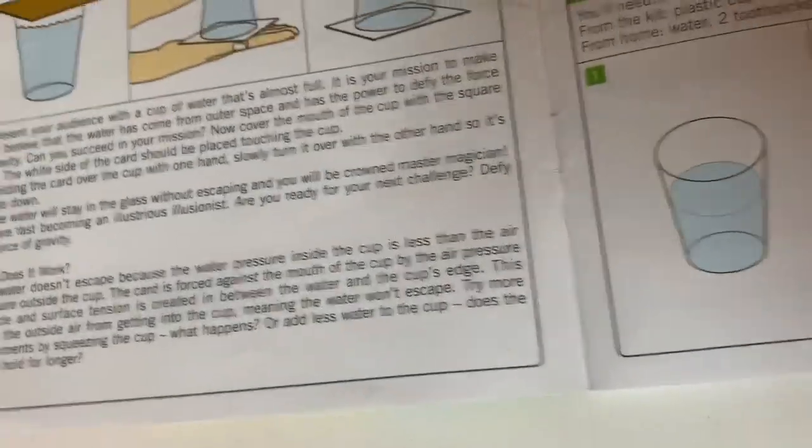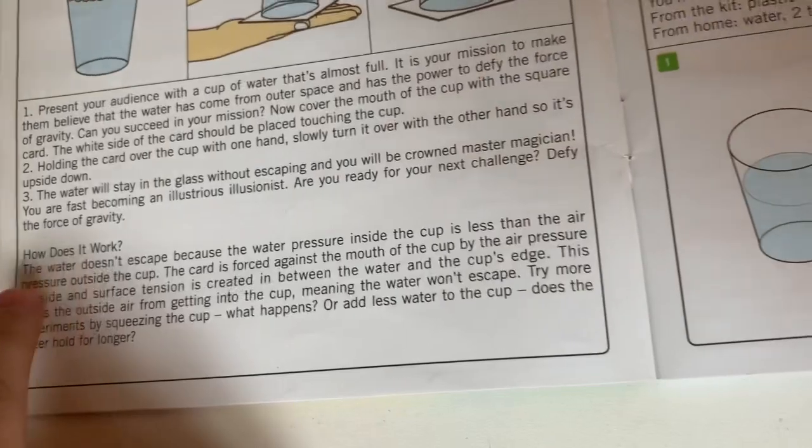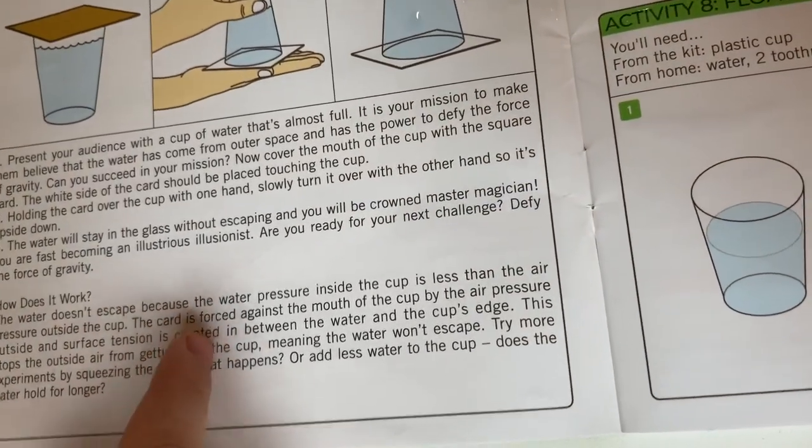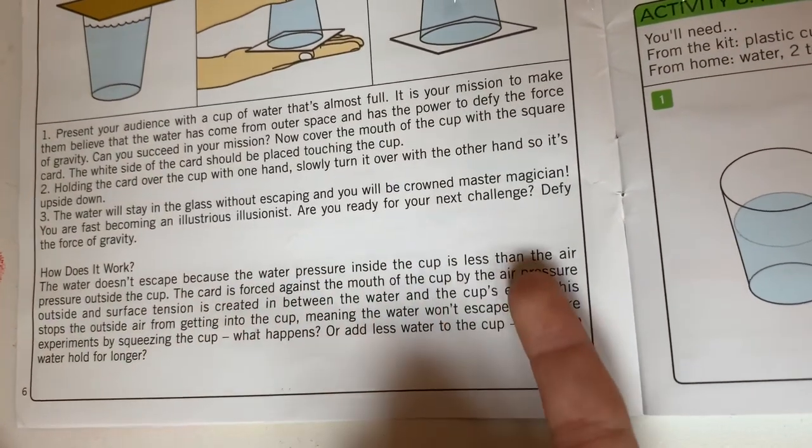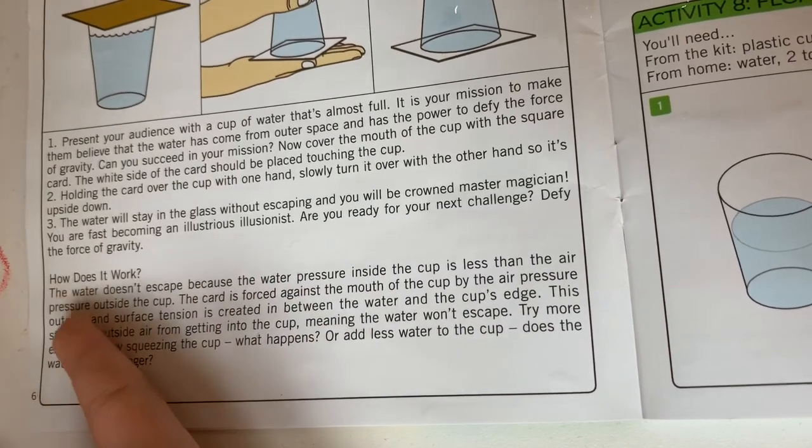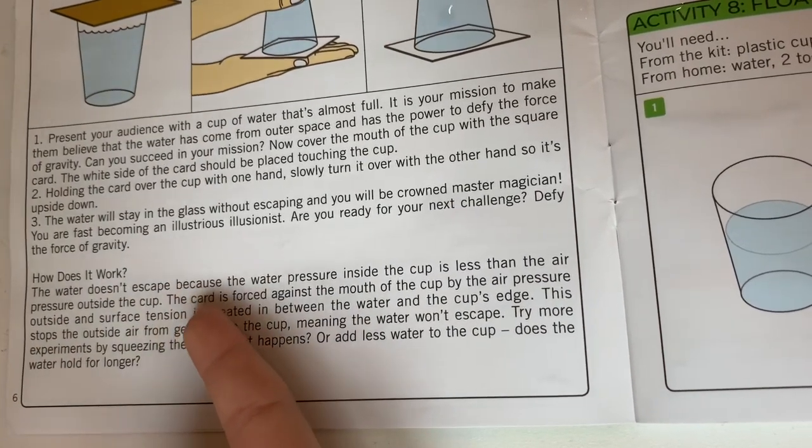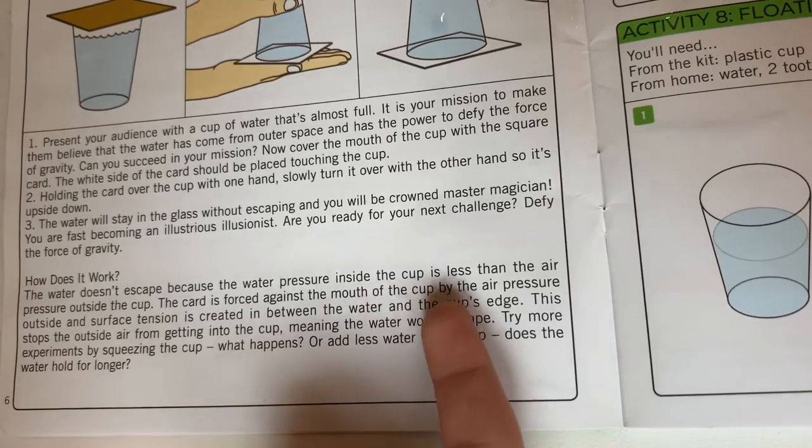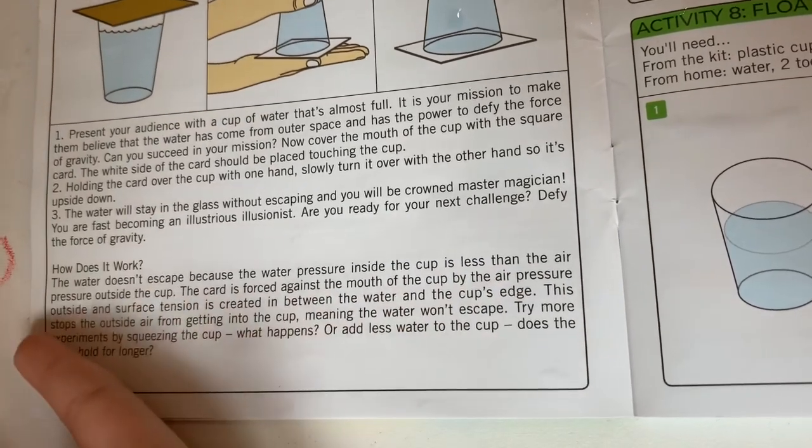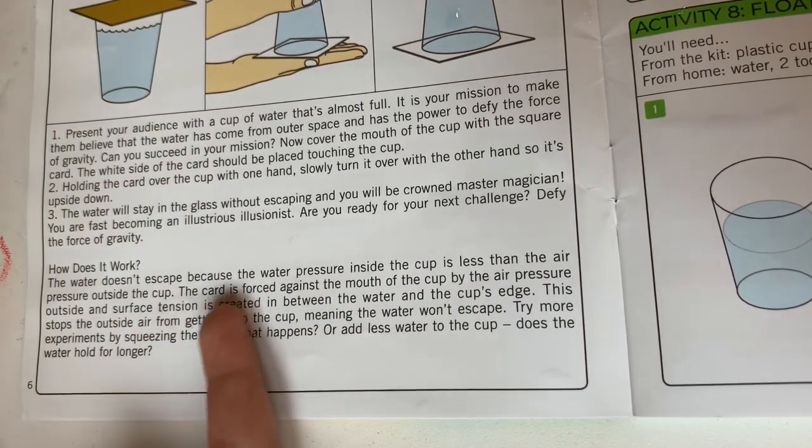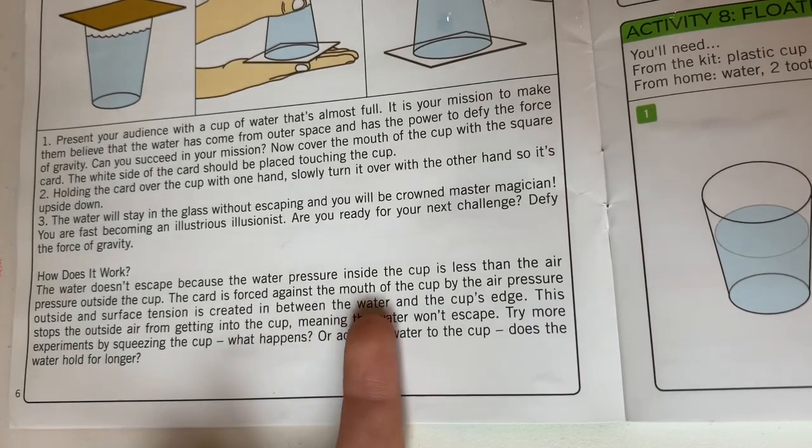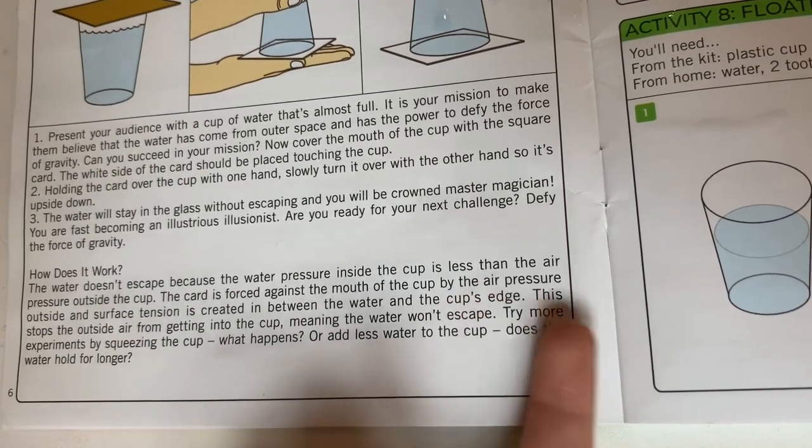How does it work? The water doesn't escape because the water pressure inside the cup is less than the air pressure outside the cup. The card is forced against the mouth of the cup by the air pressure outside, and surface tension is created between the water and the cup's edge. This stops the outside air from getting into the cup, meaning the water won't escape.